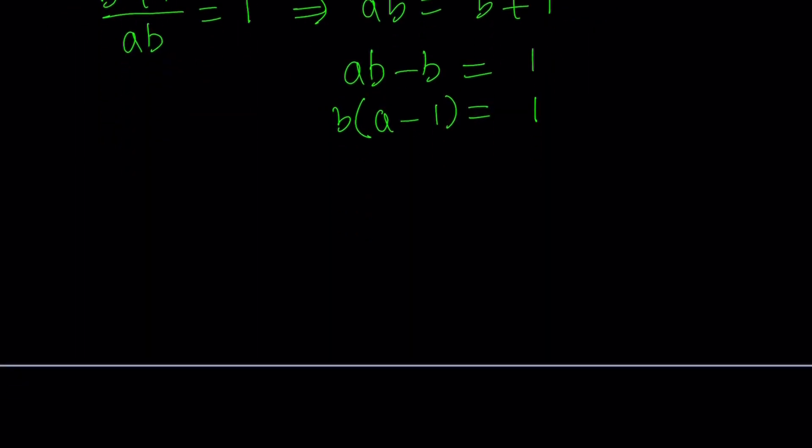So our goal is to isolate one of these variables. It's probably more meaningful to isolate a minus 1, because b will be on the other side. And we can add one to both sides to isolate a. So let's go ahead and divide both sides by b. Since b does not equal 0, we can do this. And then add one to both sides, a becomes 1 over b plus 1.